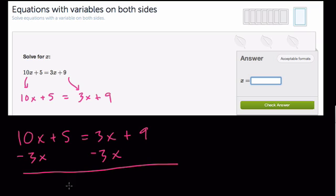Okay, and then I rewrite my equation, this cancels out, and I get 7x plus 5 equals 9.